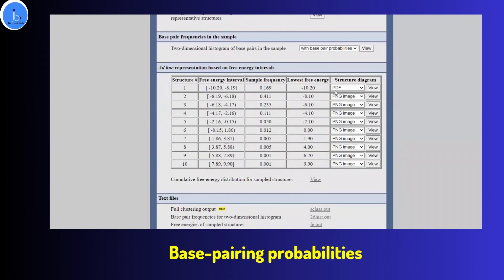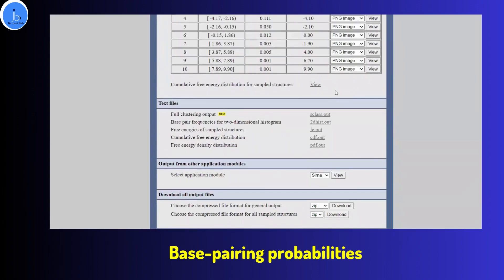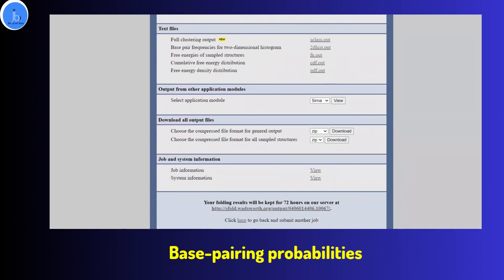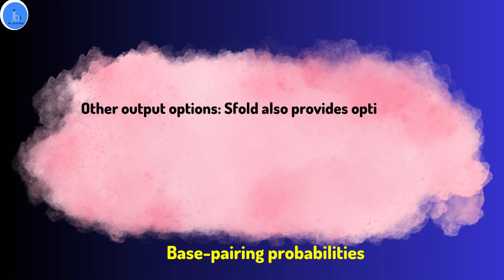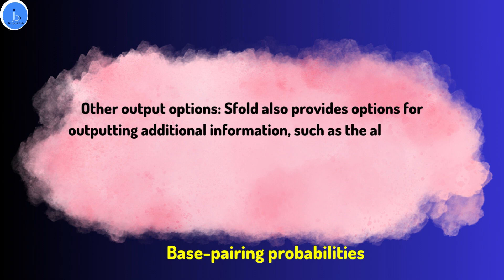S4 also provides options for outputting additional information, such as alignment of the predicted structures with other RNA structures, or the ability to compare multiple predicted structures for the same RNA sequence. So at the RNA level, structural alignments can also be done.